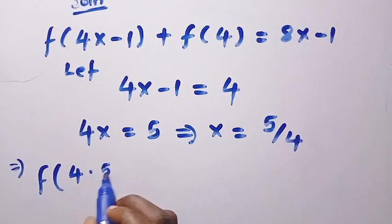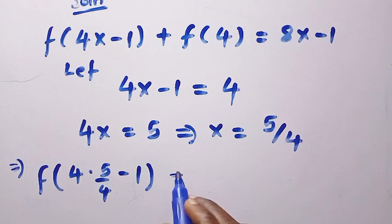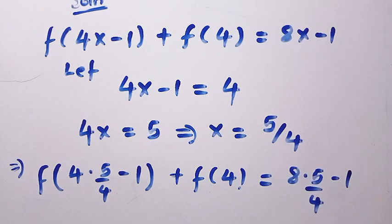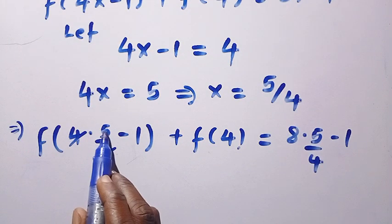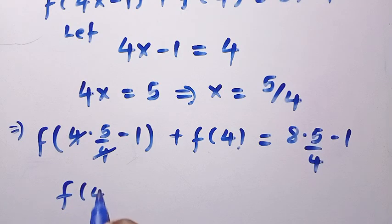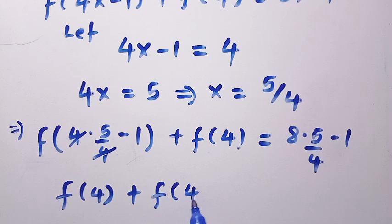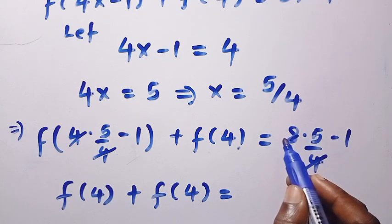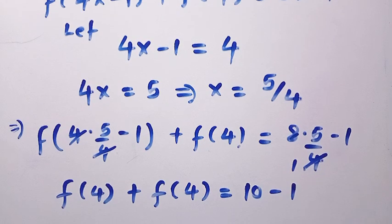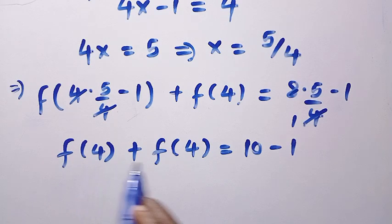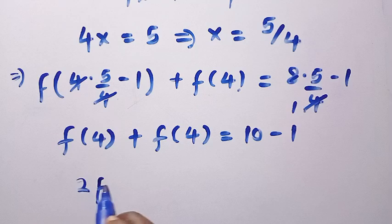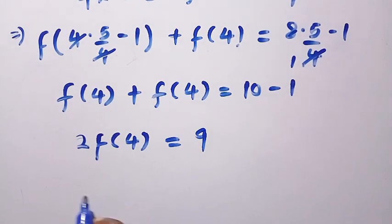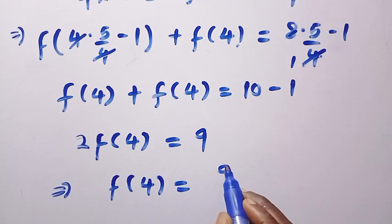We have 4x equals 5, which implies that x equals 5 divided by 4. And if x equals 5 divided by 4, we substitute back: 4 multiplied by 5 divided by 4 minus 1 plus f of 4 equals 8 multiplied by 5 divided by 4 minus 1. The 4's cancel giving us 5 minus 1 which is 4, so f of 4 plus f of 4 equals 10 minus 1, that is 9. This gives us 2 multiplied by f of 4 equals 9.